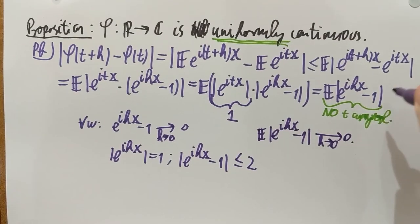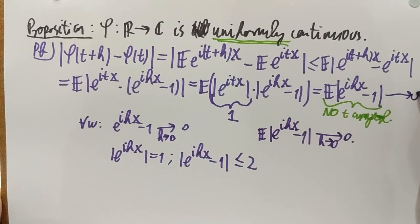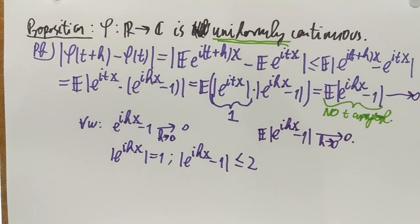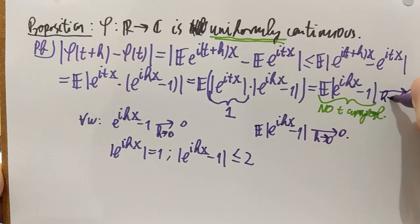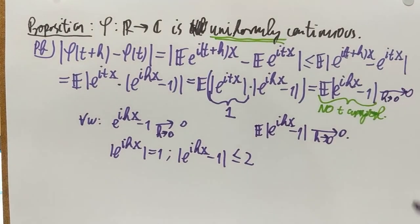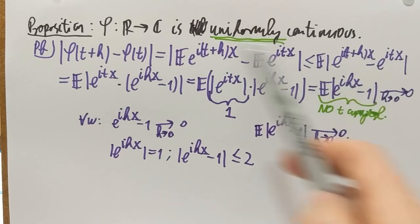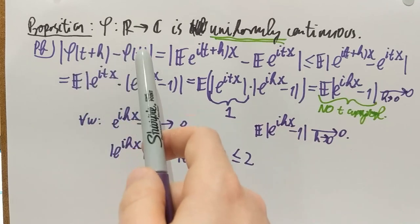And that gives me my bound. So, I can now conclude that this goes to 0 as h goes to 0, and that's exactly what I wanted to prove. So, I have a bound that goes to 0 as h goes to 0, and this bound is absolutely independent of t, there is no t anymore involved, so this difference is uniformly bounded in h, uniformly in t, doesn't matter where I take t, and that's what I wanted to prove.